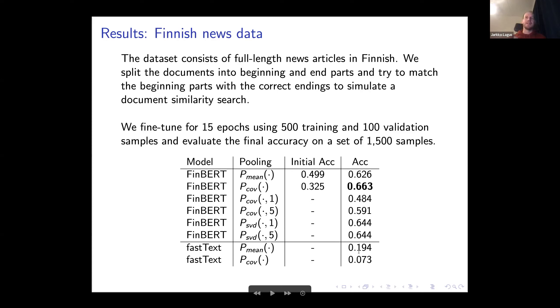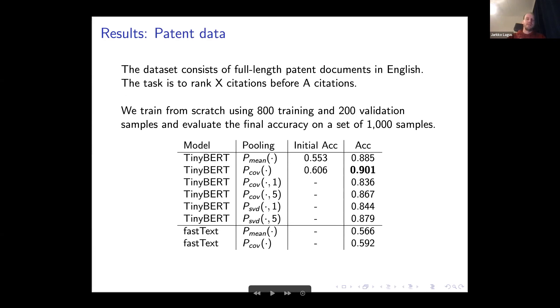For the patent data, the task is to separate X citations from A citations. X citations are stronger evidence towards accepting the patent application and A is less strong. We want to order them so that X citations would be always before A citations. We used 800 training samples and 200 validation samples, then measured the final accuracy with 1,000 samples. We trained from scratch with a TinyBERT model, fine-tuning it basically completely from scratch.